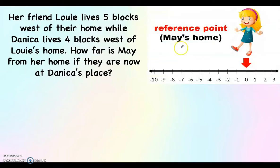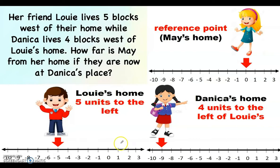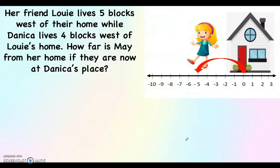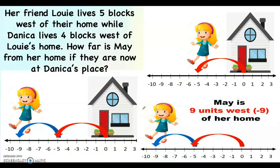Our keyword here is 'from her home,' so the reference point is May's home, which is zero on the number line. Louie is five units to the left since we're talking about west, and Danica's home is four units to the left of Louie's. May went to Louie's house, which is five units west, so May is now at negative five on the number line. From Louie's home to Danica it is four blocks west, therefore they are now at negative nine on the number line.